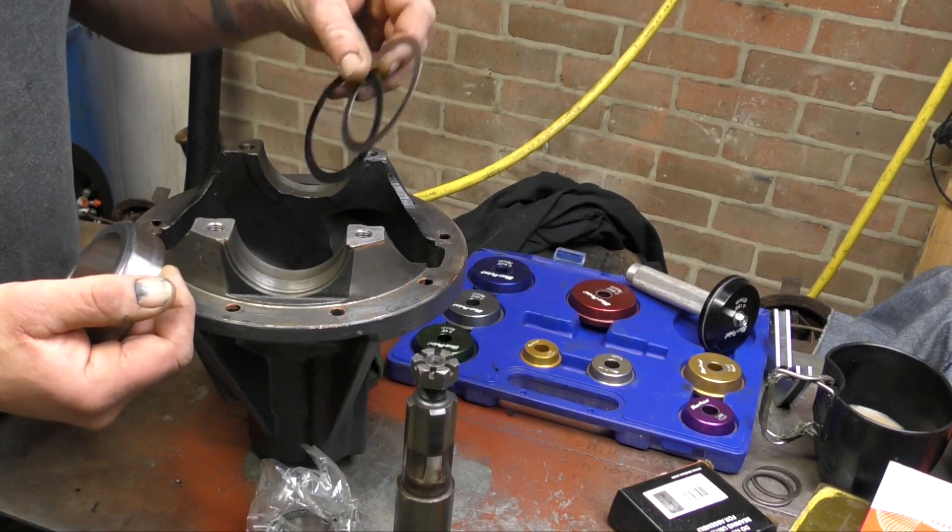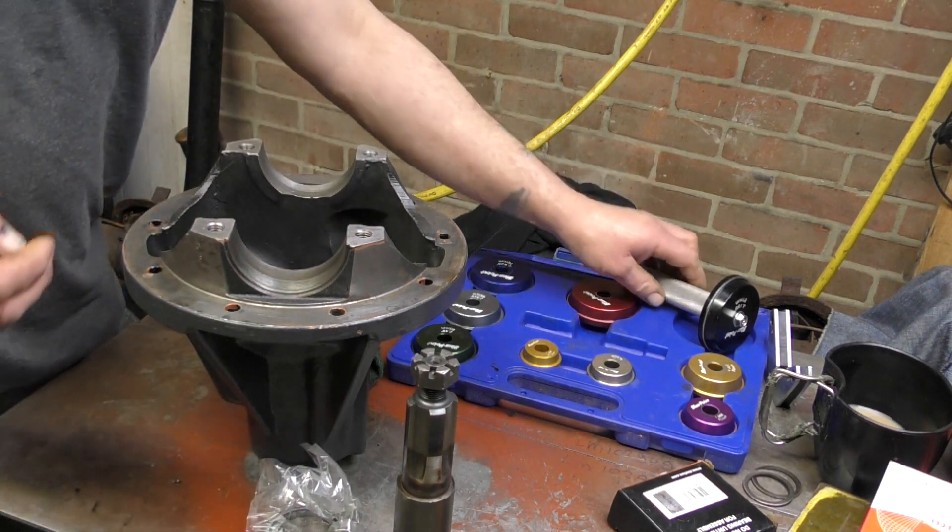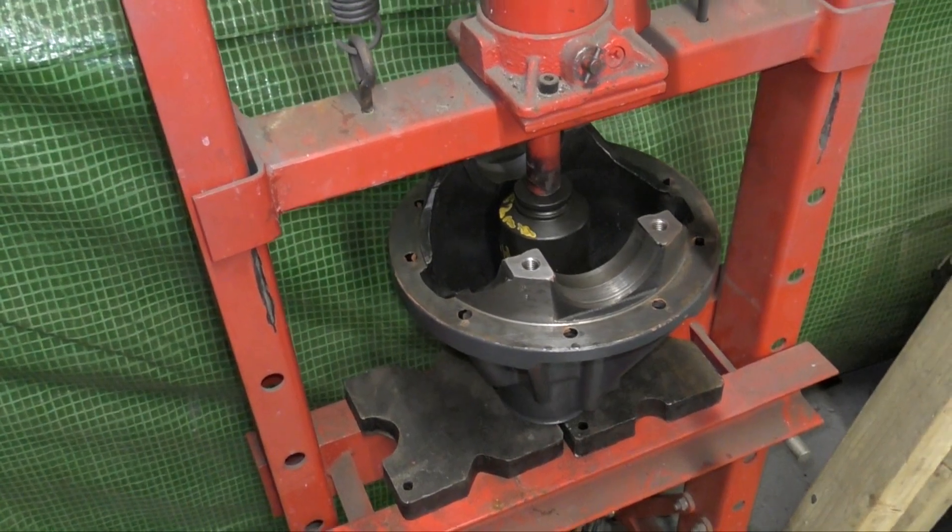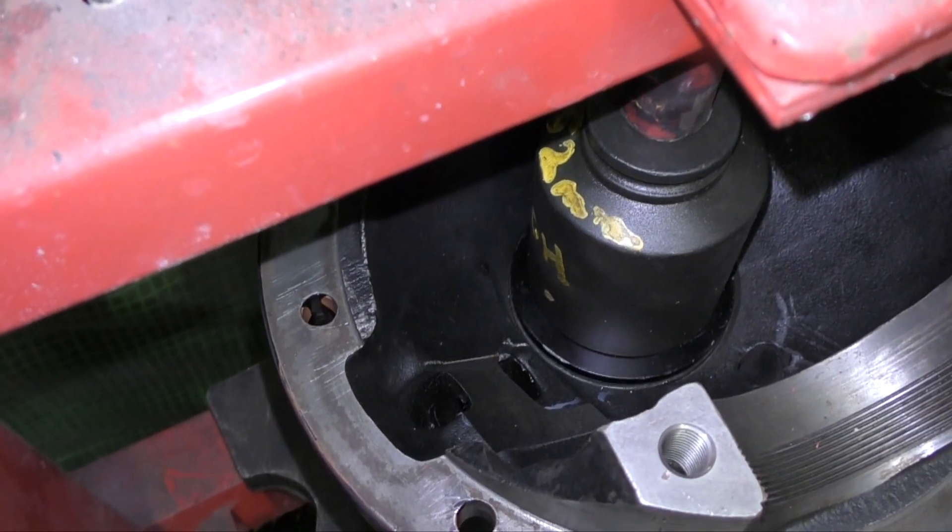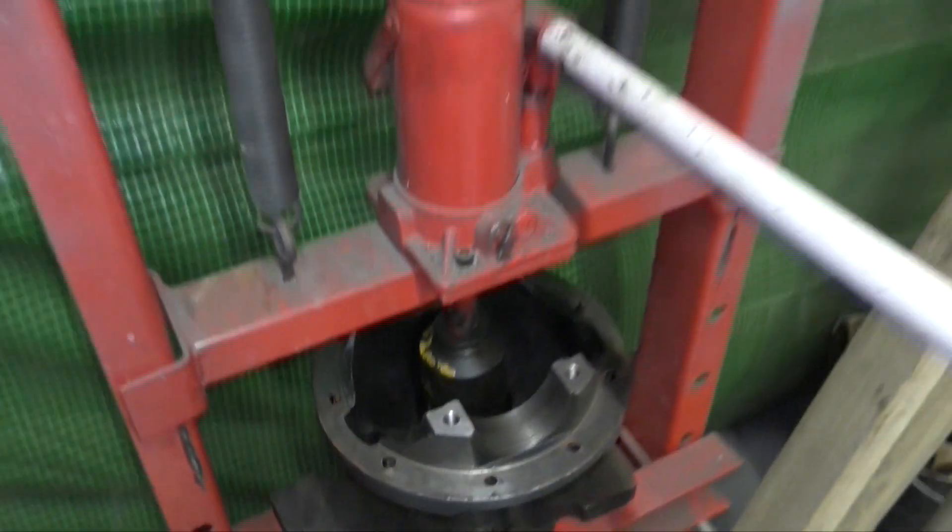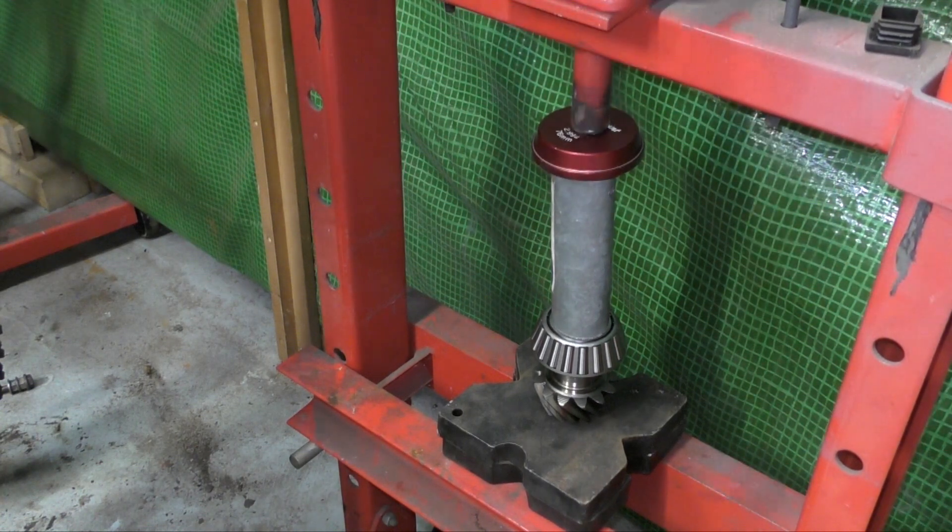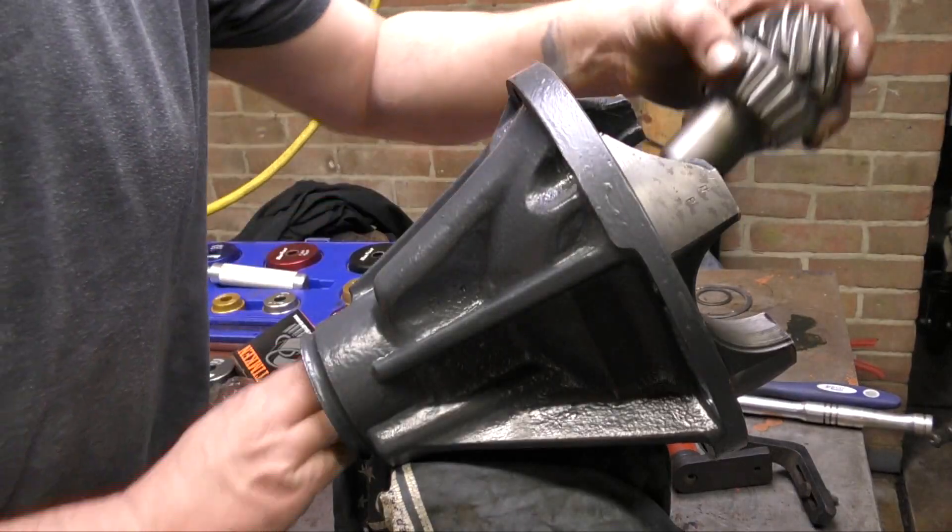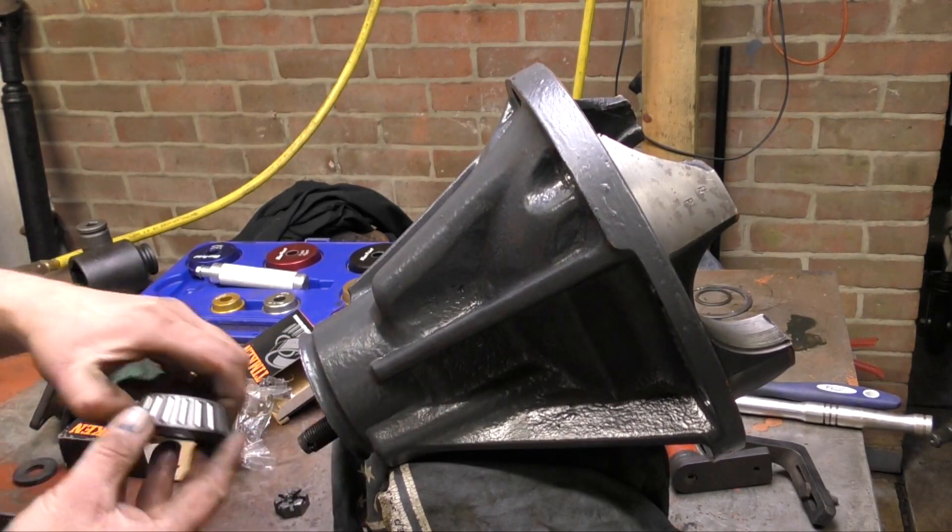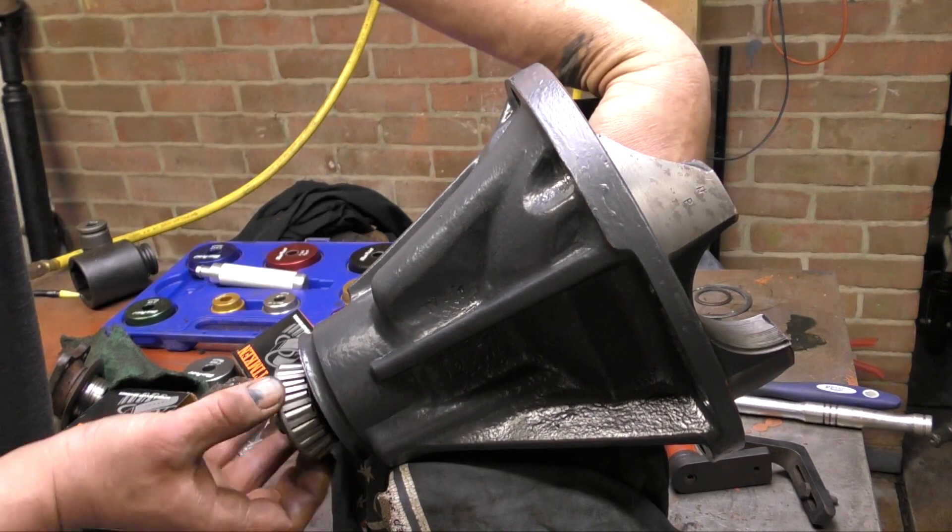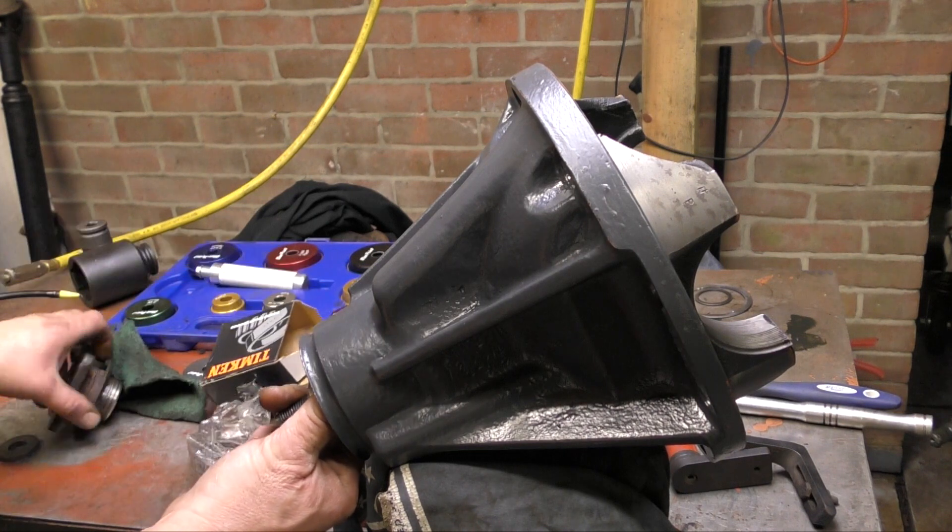Just to recap, I've told you that you put shims, or the original shims that you took out of the diff back in and then pushed the bearing race back into place. Ashcrofts actually use a dummy bearing, which is a bit smaller so it can just pop out, but we don't have that luxury. We've also put the bearing straight onto the pinion and then we've put the pinion into the housing and then nipped it up so it's got some drag on it, so it's got a bit of preload on. This is where we can then start to measure the height of the pinion.